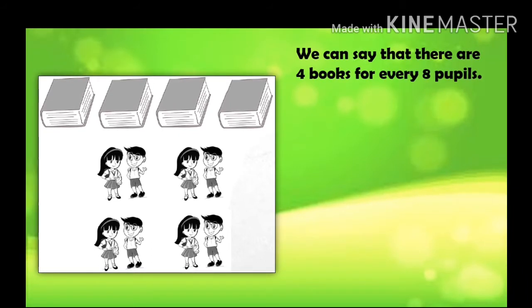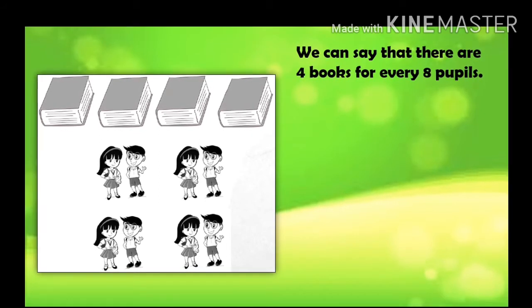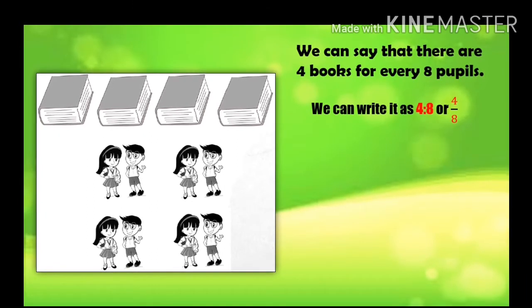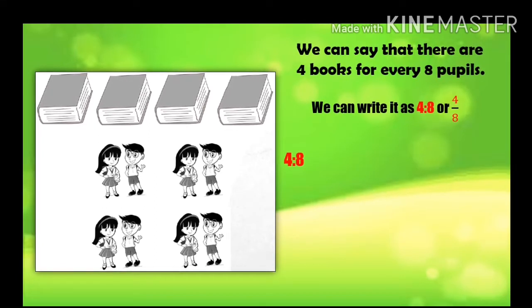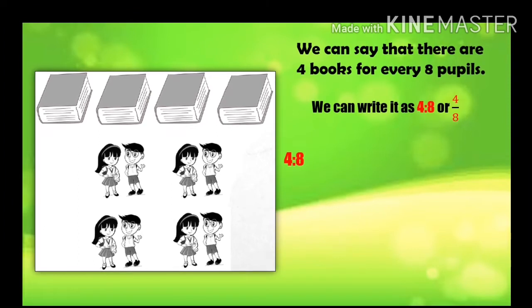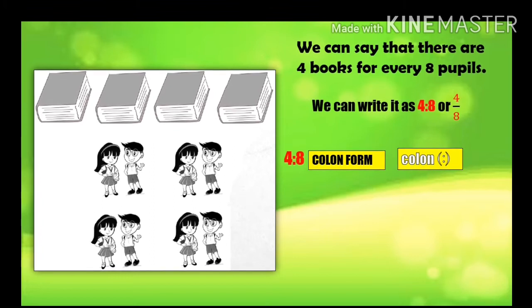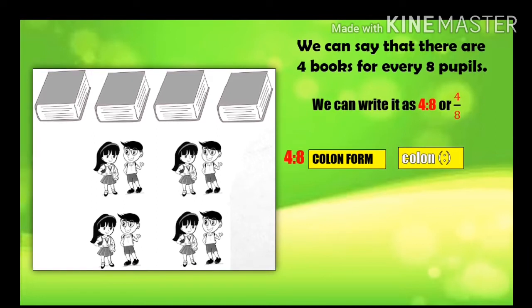In this picture, what can you say about the number of books to the number of pupils? We can say that there are four books for every eight pupils. How do we write it in ratio? We can write it as 4 is to 8 or 4 over 8. 4 is to 8 is a ratio written in colon form because we used a colon in comparing two items — the books and the pupils.